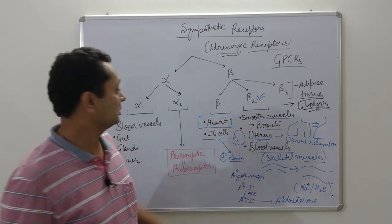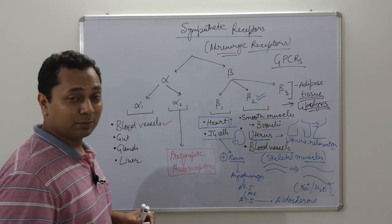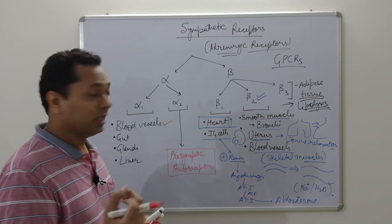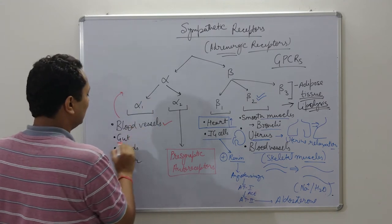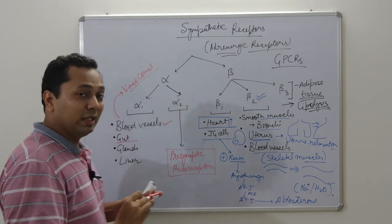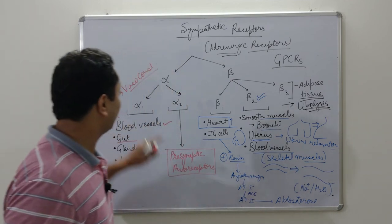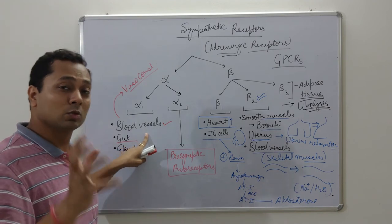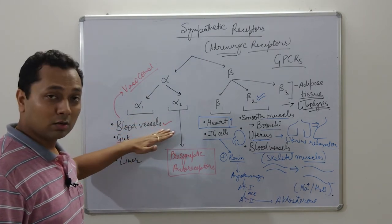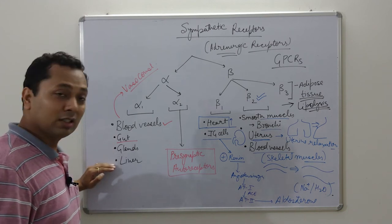Now we will discuss alpha receptors. Alpha-1 receptors are present on blood vessels where vasoconstriction will occur, restricting blood flow to less critical areas. Alpha-1 receptors are present in the gut — the GIT — causing vasoconstriction and reducing blood flow to unimportant areas during stress. The body intelligently directs blood to organs that are in demand at that point in time.